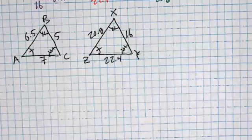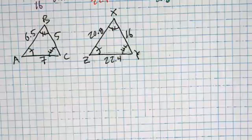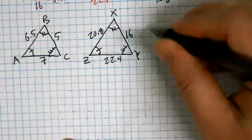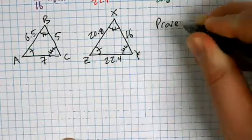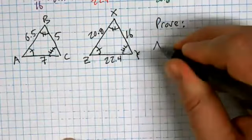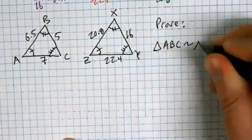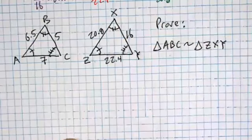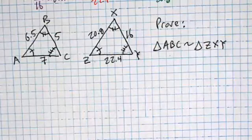Add angle markings: at A and Z, an arc with a single tick; at B and X, a double tick; at C and Y, a triple tick. We are going to do our first proof today using this problem. Proof is really important in geometry — this book approaches it in a way students find easier to pick up. The problem is: prove that triangle ABC is similar to triangle ZXY. We'll use a flow chart proof.